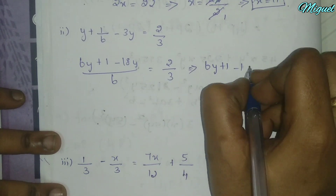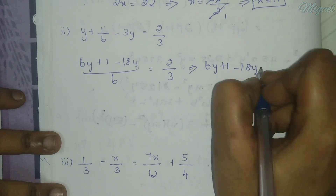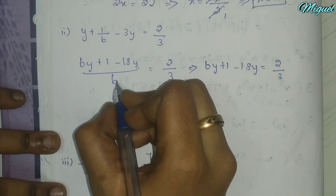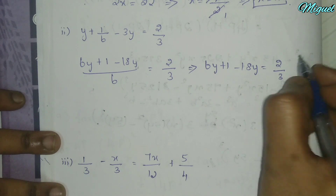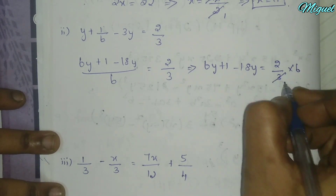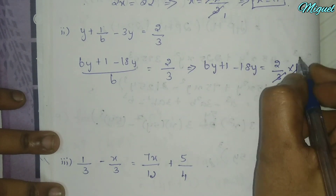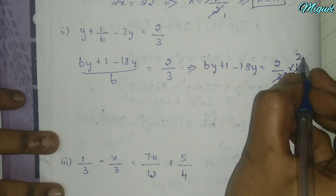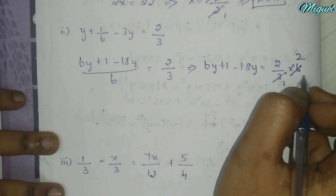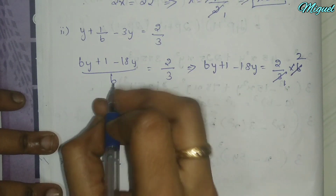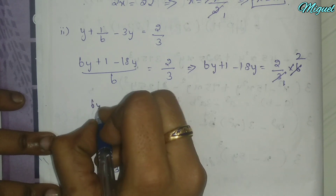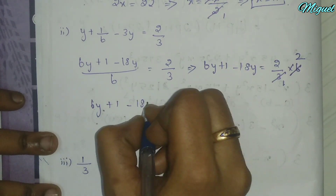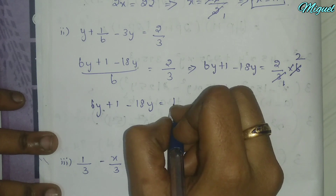So 6y plus 1 minus 18y. On the right side, 2 by 3 multiplied by 6: numerators cancel, leaving 6y plus 1 minus 18y equals 2 into 4.